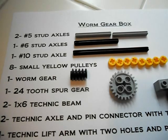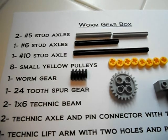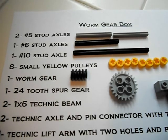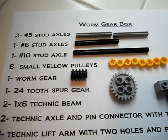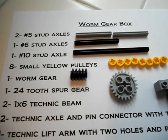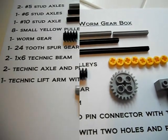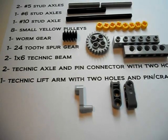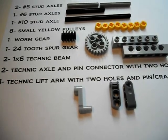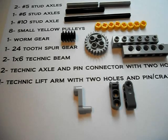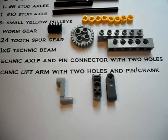We will also need eight yellow small pulleys, one worm gear, one 24-tooth spur gear, two 1x6 Technic beams, two Technic axles and pin connectors with two holes,